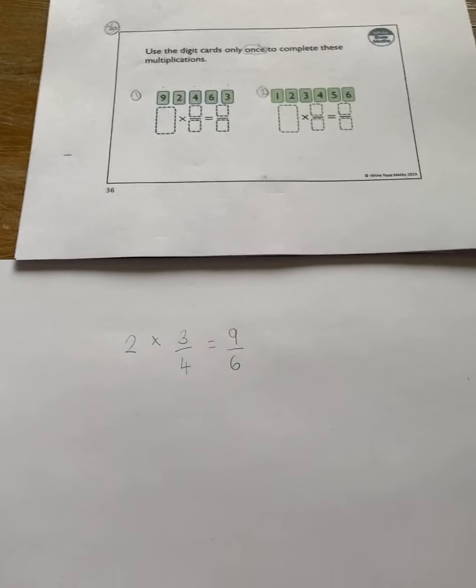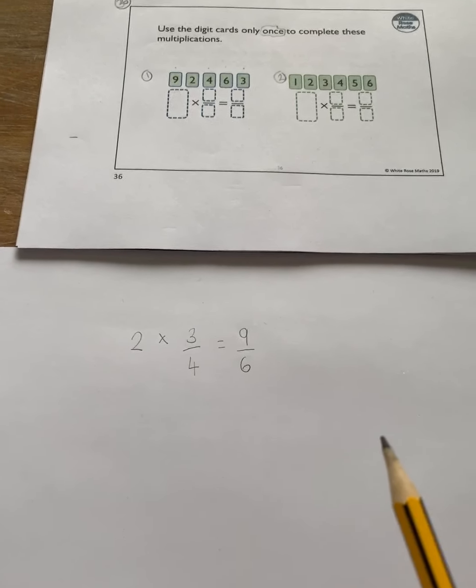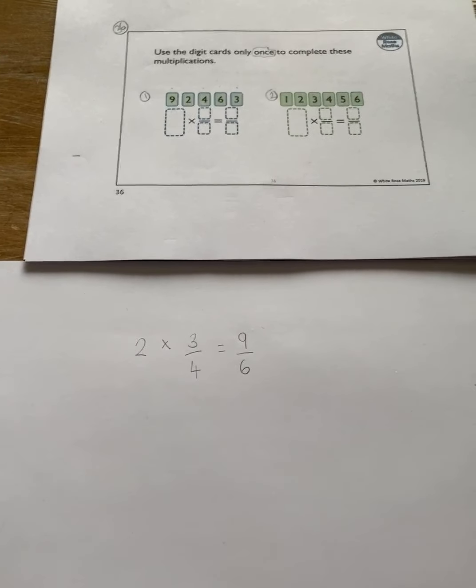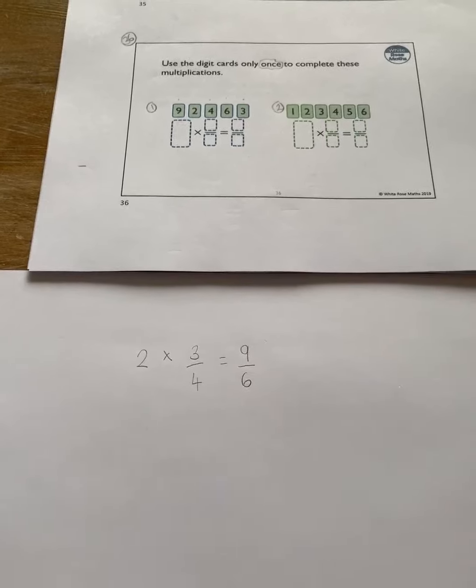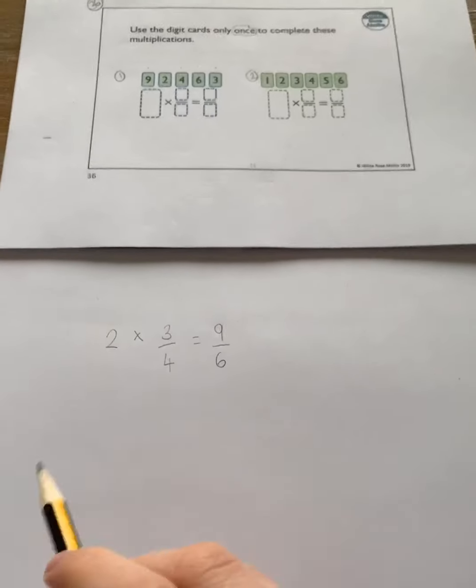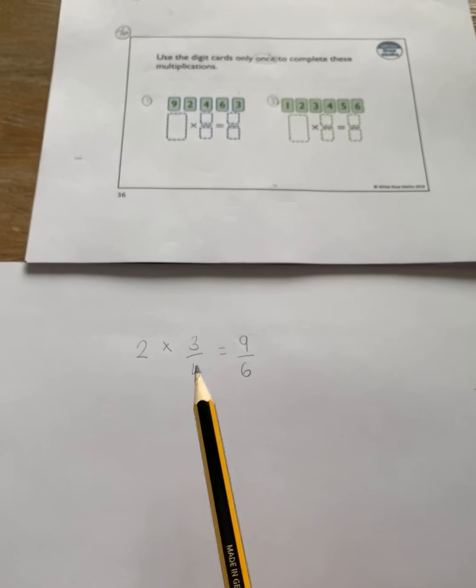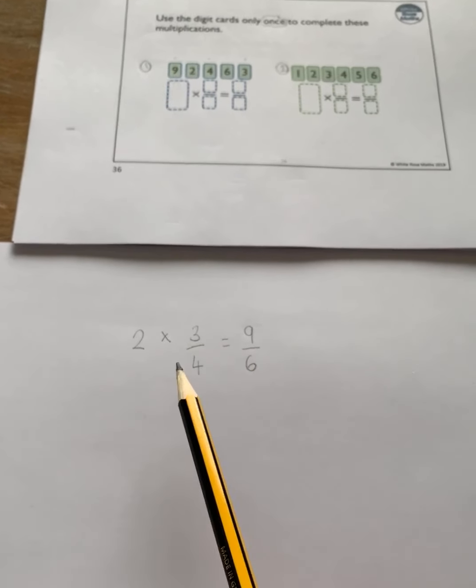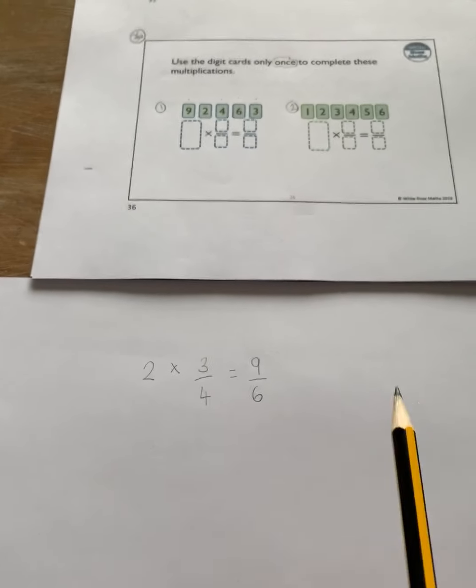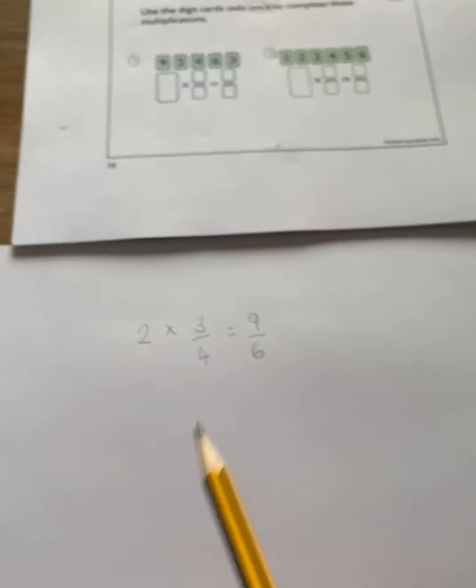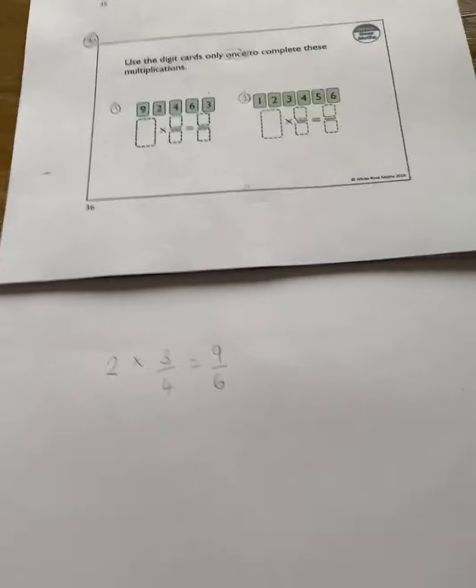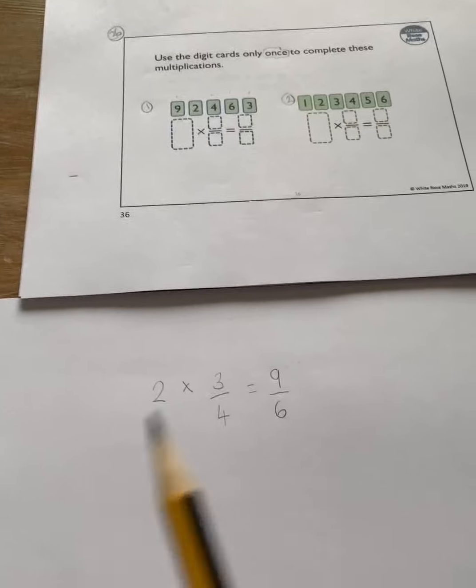Now with this question you're probably thinking well they don't equal each other. Looking at it like this it doesn't look like they do but we need to find the lowest common denominator because traditionally if it was eight, yes the four would fit into the eight but the six wouldn't.